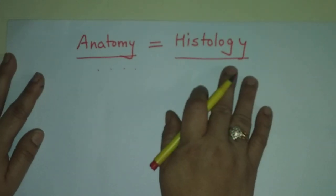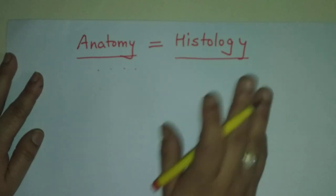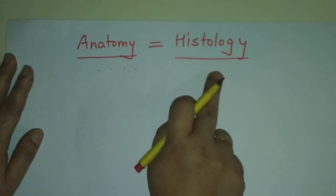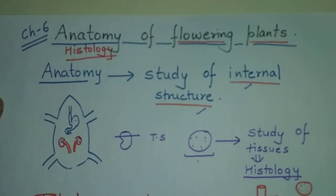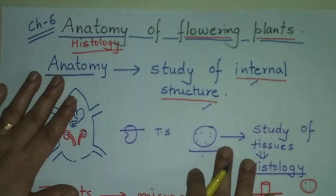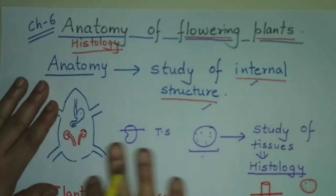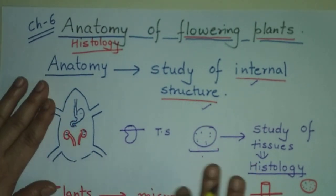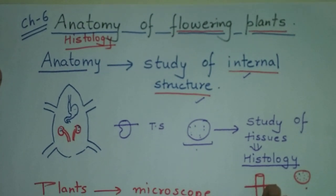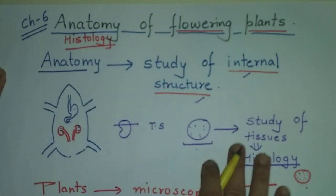So when we say anatomy in plants, it is equivalent to histology. But in case of animals, these are two different branches — the study is different. So this is about anatomy versus histology. In our next lecture we will be studying more about the anatomy of flowering plants.